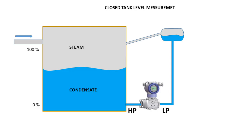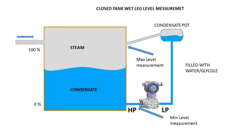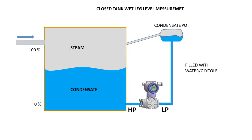First we must know the property of steam. When steam cools down it will change to water. That means the bottom of the tank will have condensate water and the steam will be at the top part of the tank. If we connect the low impulse line to the top of the tank, the steam will go through it and condensate in the line.